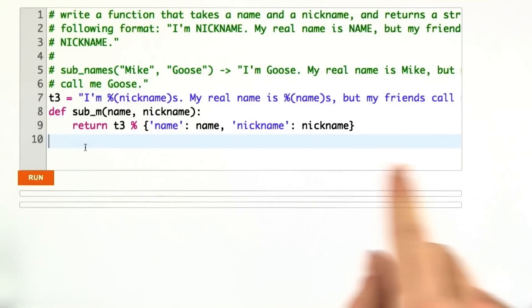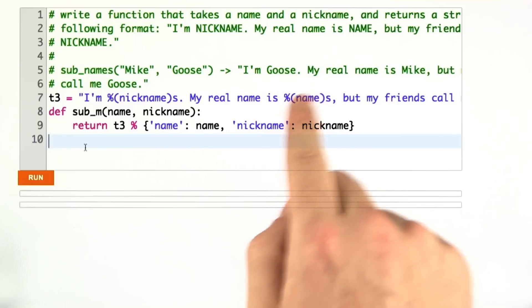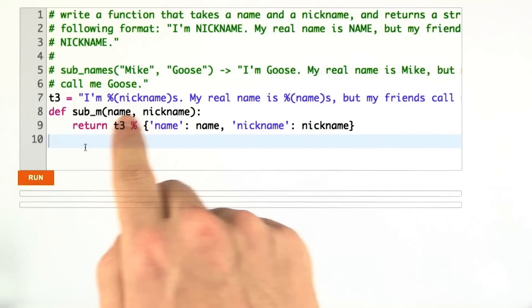Okay, here's my solution to the third substitution. We've got our new string that takes these named substitution variables, and this time it uses our function parameters and substitutes those into the string.